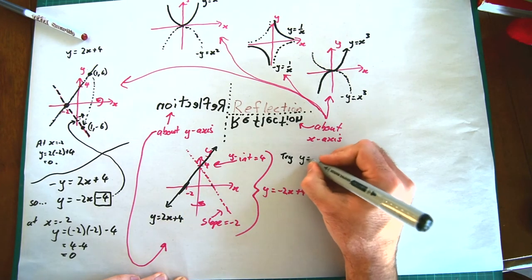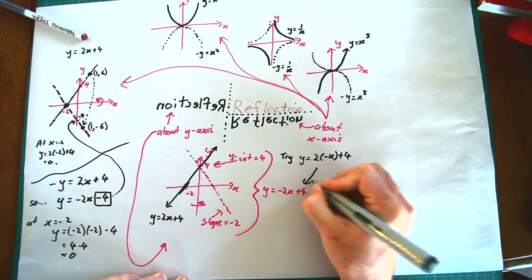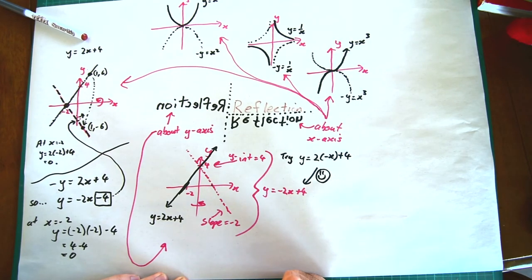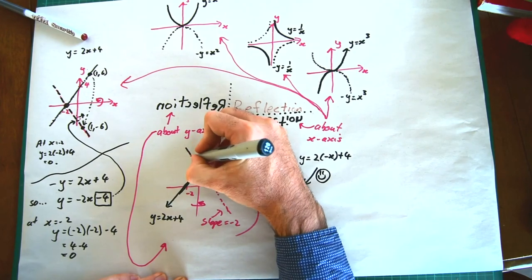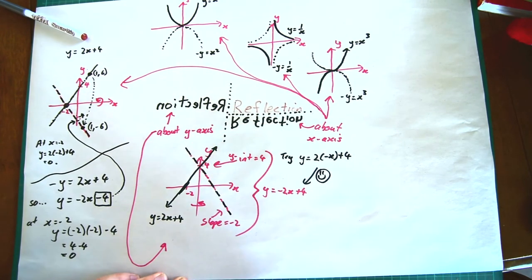And you notice this does what we want. If x was a positive number, when you put a minus in front, it becomes negative. If x was negative, when you put a negative in front, the two minuses make it positive. It does what we want. So we've got y equals 2 times negative x plus 4, and of course this is negative 2x plus 4. This is the equation we thought it should be.